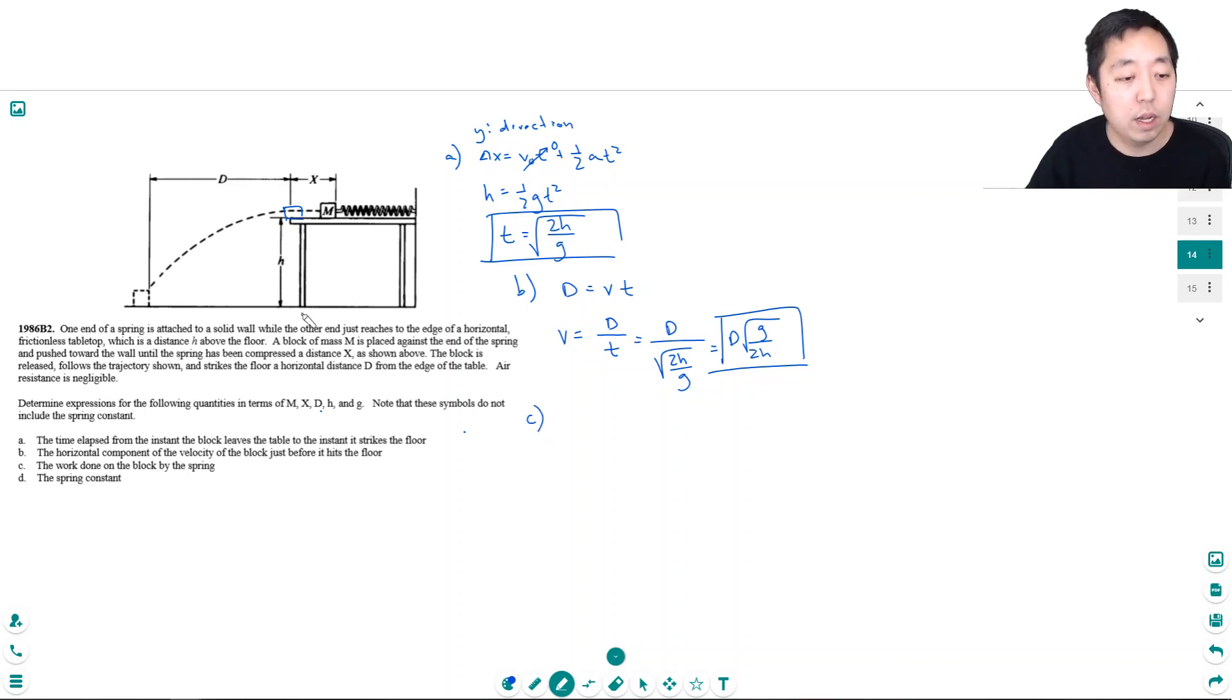The work done on the block by the spring. So basically, the spring does all the work to give it kinetic energy. There's no kinetic energy here, and then it has kinetic energy here as it's accelerating. So the energy it has is one half m v squared, and that would have to be the work done by the spring because all of its kinetic energy came from the spring.